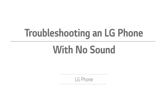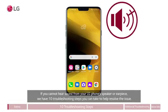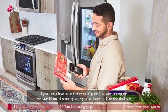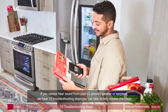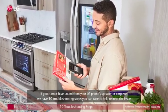10 troubleshooting steps. A crossed out sound icon appears at the top right with a speaker and three increasingly larger curves next to it. If you cannot hear sound from your LG phone speaker or earpiece, we have 10 troubleshooting steps you can take to help resolve the issue.